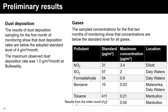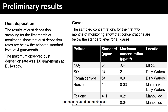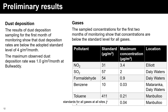Results from the initial round of dust deposition monitoring show that the dust deposition rates are below the adopted standard of four grams per meter squared per month at all sites, with the maximum observed concentration at Balwadi Conservation Reserve. Similarly, the initial two rounds of sampling show that concentrations are below the standards for all gases at all sites.